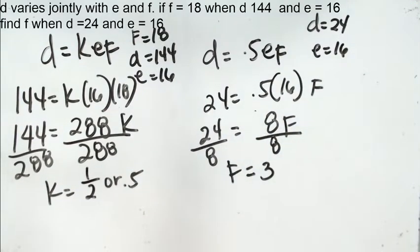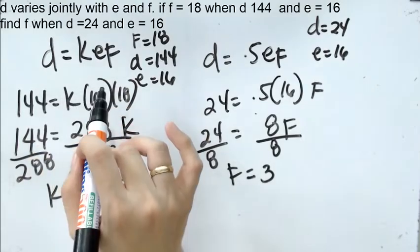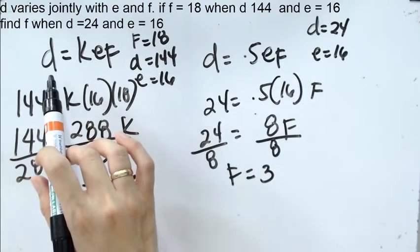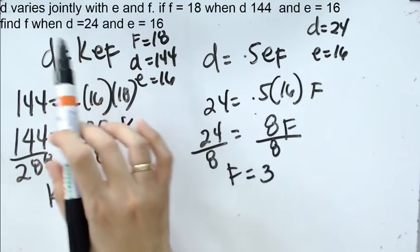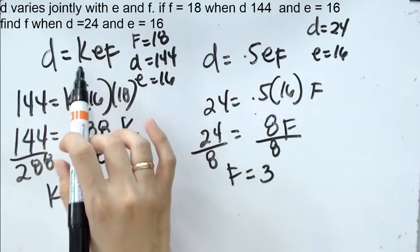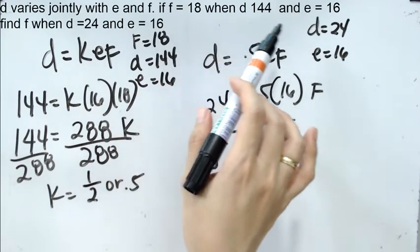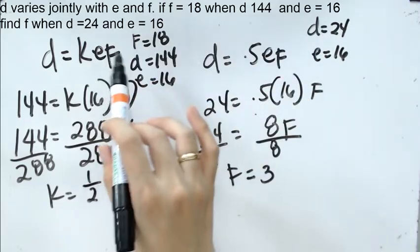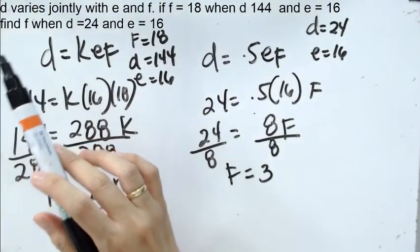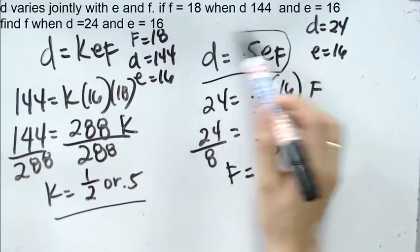Remember, whenever we are working with joint variation, we first change the given statement into equation. Take note that the first letter in the given statement will be the first letter you need to write, and then the others will follow. Whenever we are talking about joint variation, it simply means that we need to multiply everything. That's why we have here KEF. And then afterwards, we solve for the value of K from the given second statement.